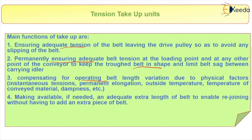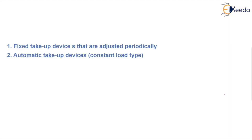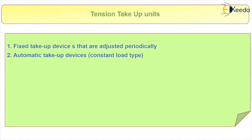Third: it accommodates operating belt length variation due to physical factors like tension, elongation, outside temperature, temperature of conveyor material, and dampness. Fourth: it makes available, if needed, an extra length of belt to enable rejoining without having to add an extra piece of belt.